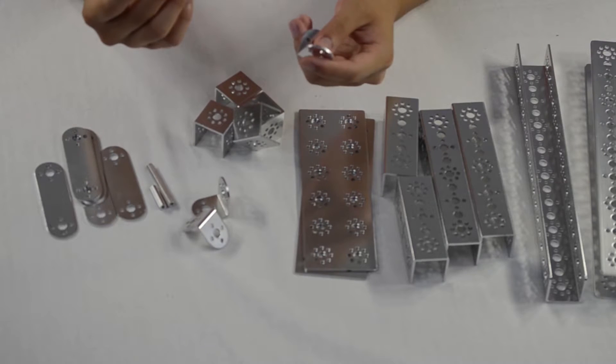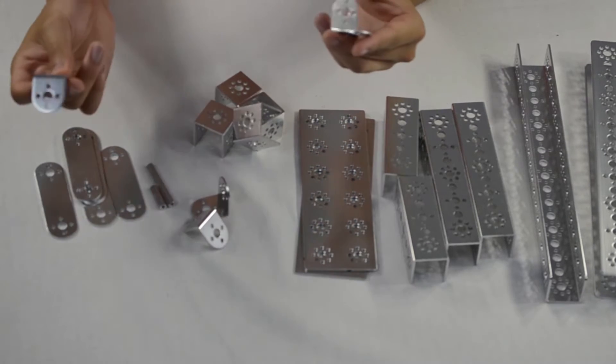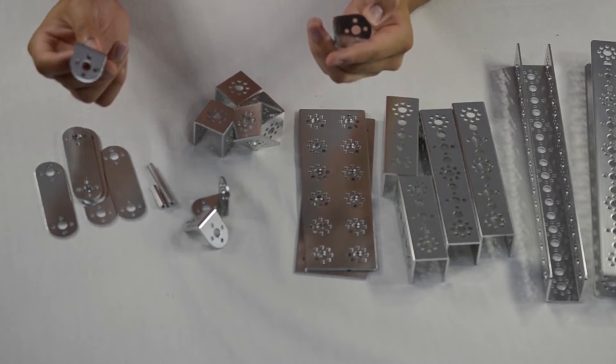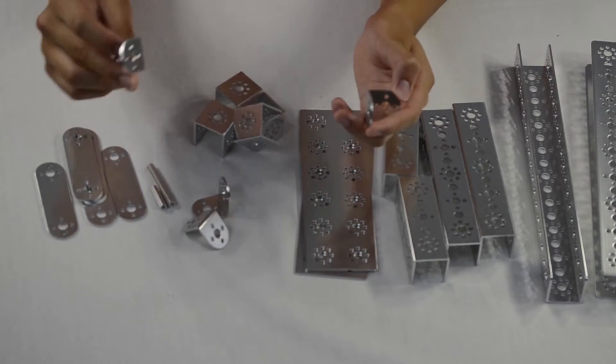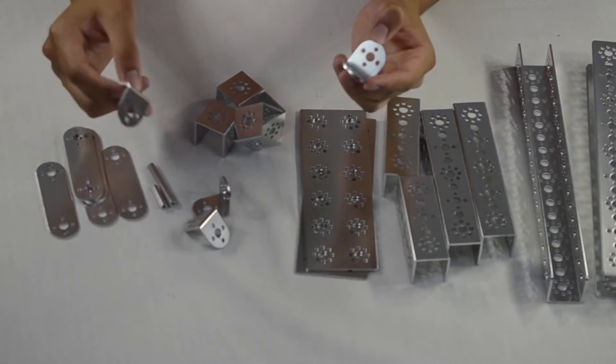You have your L brackets which are also for securing. These can be used for either tying two things into each other or creating a more sturdy build when building up and down.